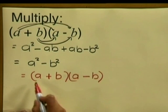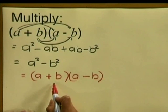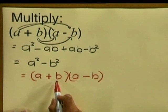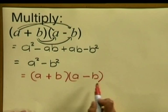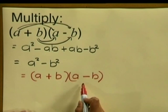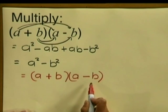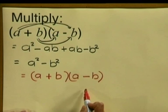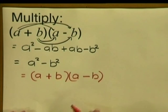In the one bracket we have the sum of the square roots — here a and b are added. And in the other bracket we have the difference of the square roots — here a and b are subtracted. The minus sign means difference. So from this we can see that we can factorize the difference of two squares.